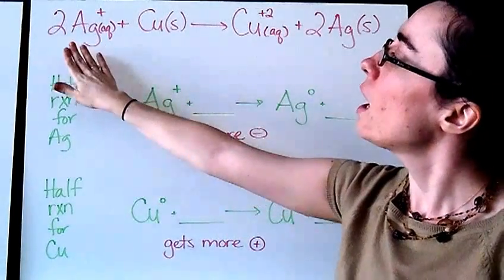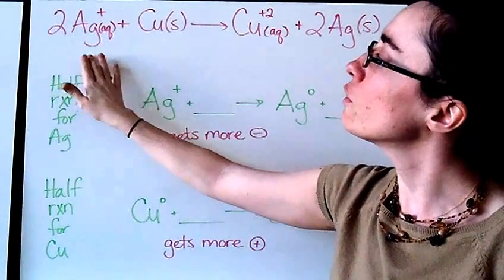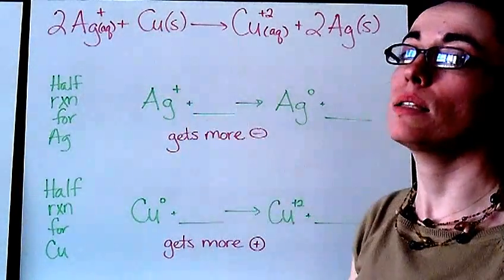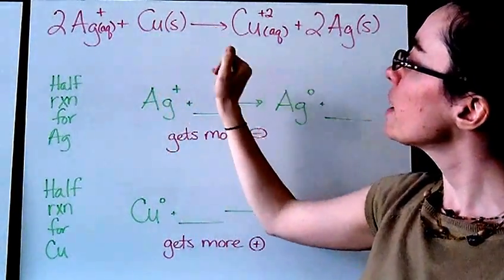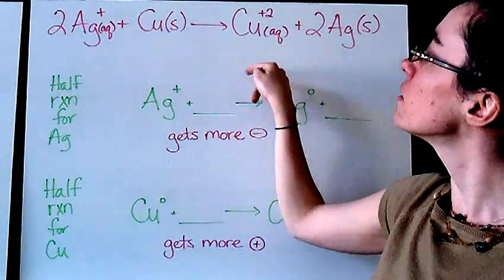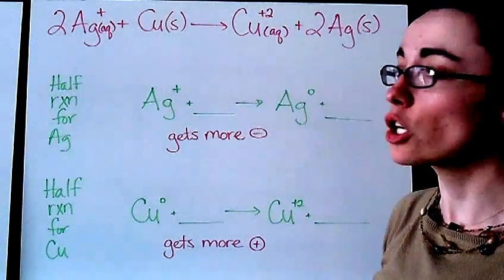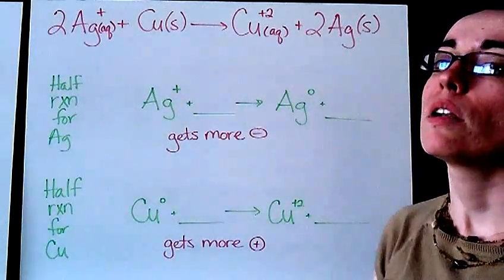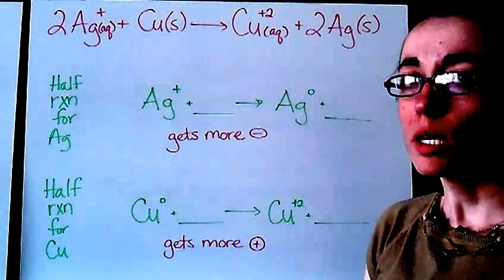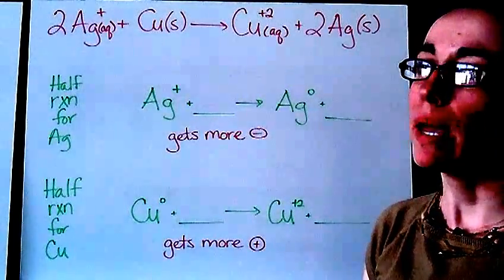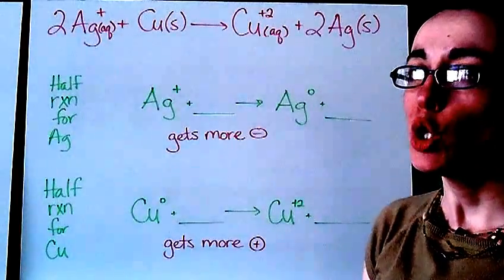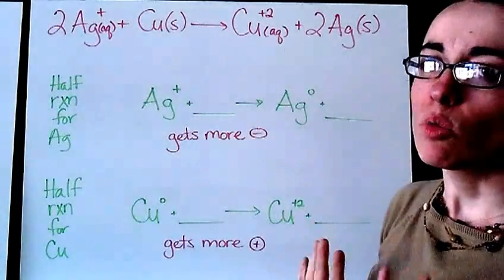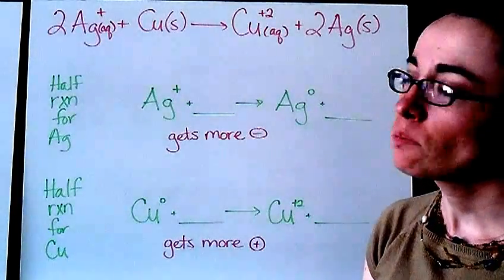So let's start with our sample equation here. I have two silver ions with a one positive charge. To that I am adding some copper in the solid state. Through the reaction we end up with some copper ions that are dissolved in water, and they each have a positive two charge, or oxidation number. And then I end up with two particles of silver that are in the solid state. Now, just like we did in class today, we are going to make our lives a little bit easier. We are going to ignore the coefficients at this time.